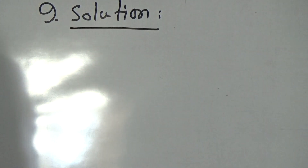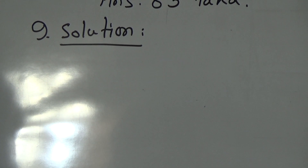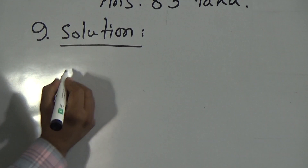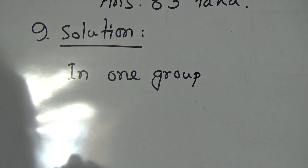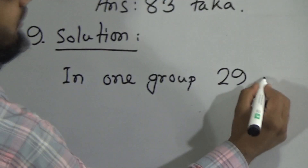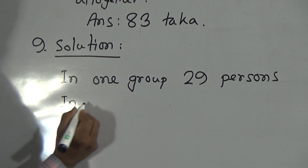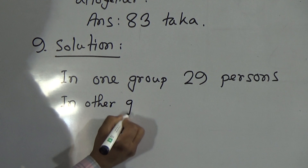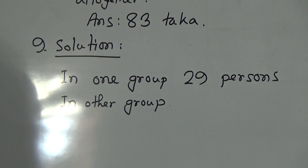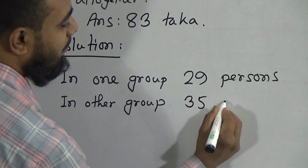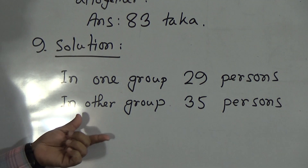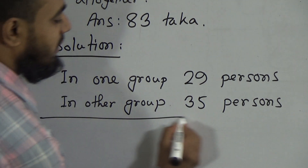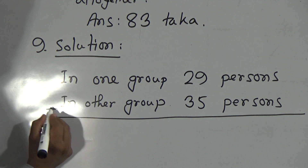Solution of question number 9. In one group there are 29 persons, so write down: in one group, 29 persons. In the other group there are 35 persons, so write: in other group, 35 persons. We need to calculate how many persons are there in both groups together, that is why we should add. We give a line and place the addition sign before adding.